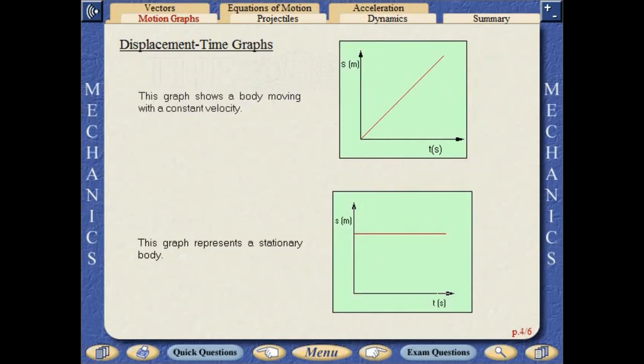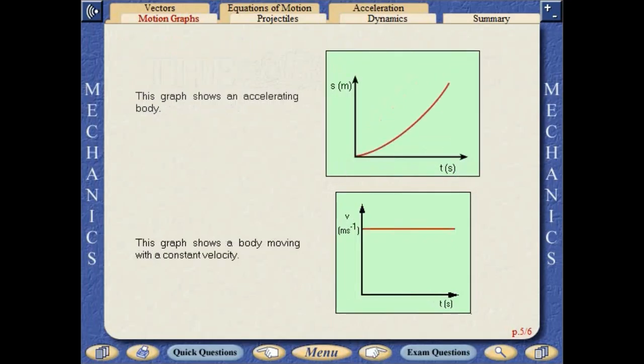The graphs shown here represent a moving body with a constant velocity and a stationary body. The graphs shown here represent the motion of a body accelerating and a body moving with a constant velocity.